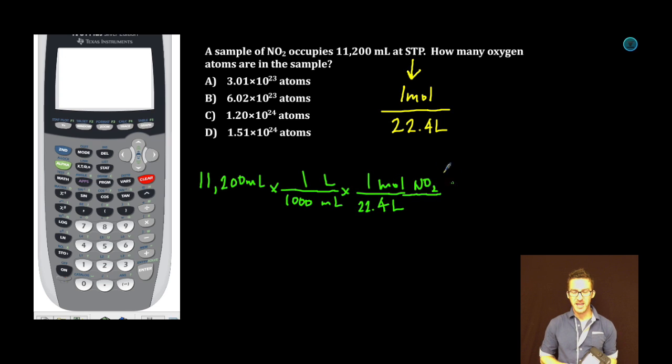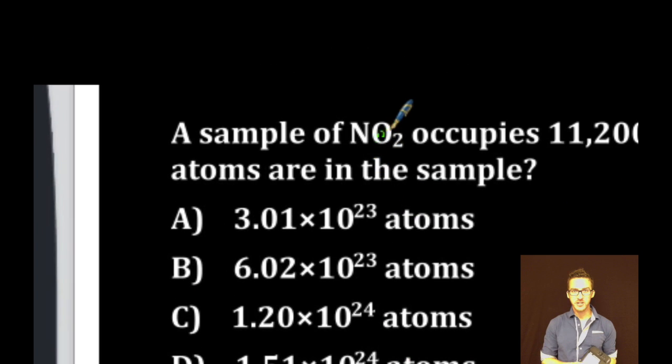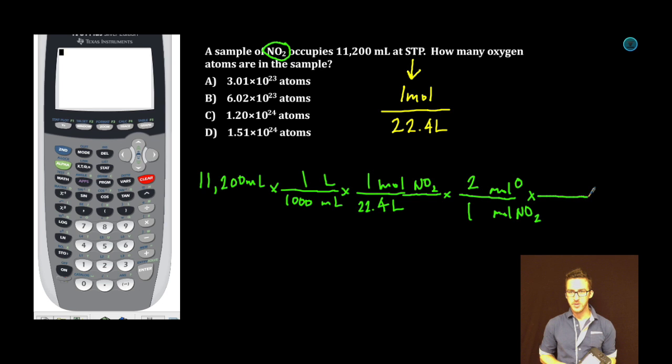Keeping it going. You guys recall we're talking about NO2 here. I'm gonna convert from moles of NO2 to moles of oxygen. For every one mole of NO2, there are two moles of oxygen. Again, that just comes from looking at the formula. And then finally, I'm gonna convert from moles of oxygen to atoms of oxygen. Avogadro's number.